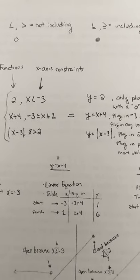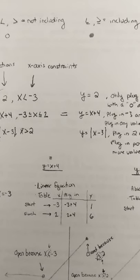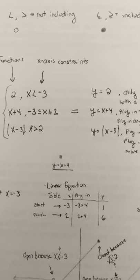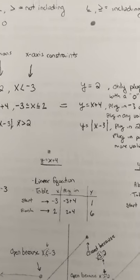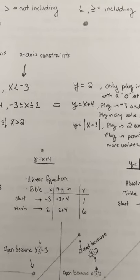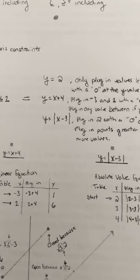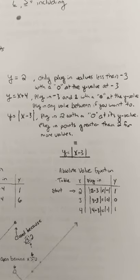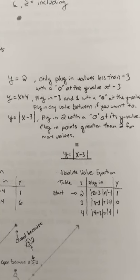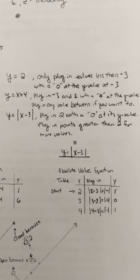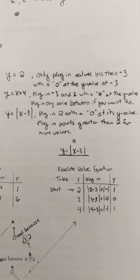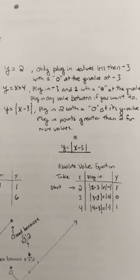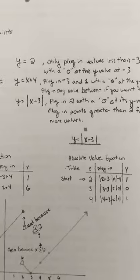Quick recap on piecewise functions. If I just had 2, that's the same thing as y equals 2. You can see the other one's rewritten. And since my restriction, my constraint says that x is less than negative 3, that means I'm only going to plug in values that are less than negative 3. And you can kind of take a moment and just read through what I wrote there. This is all posted online. Absolute value function, there's a quick reminder with a table on how to do the absolute value function.